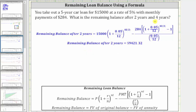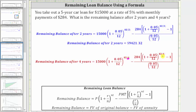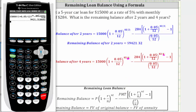Now let's find the remaining balance after four years. The only change we have to make is to change T equals two to T equals four, which means we need to change the exponents from 24 to 48, since 12 times four is 48, rather than 24.